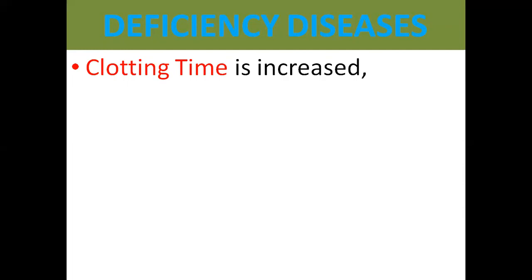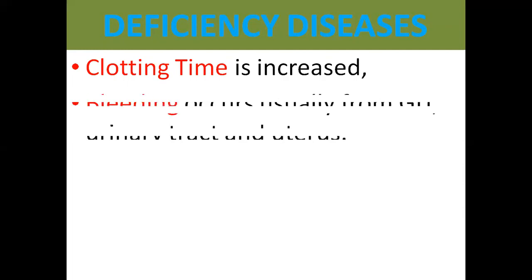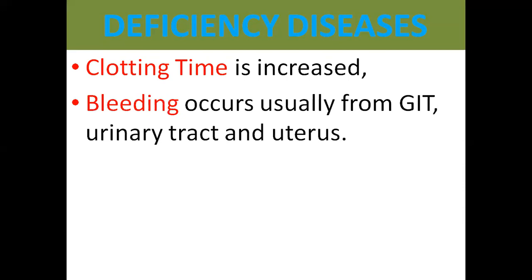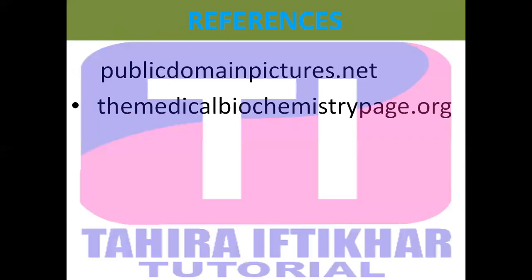A second consequence of deficiency is bleeding, which typically occurs from the gastrointestinal tract, the urinary tract, and the uterus. If clotting does not occur rapidly, continuous bleeding results. This deficiency condition is known as avitaminosis K. This concludes the discussion on Vitamin K. Next time, inshallah, we will cover the next vitamin. Allah Hafiz, Assalamu Alaykum.